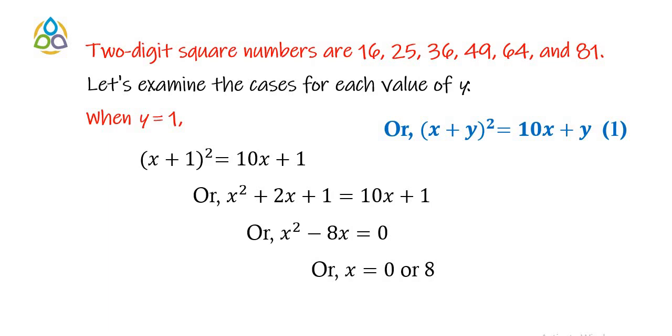As per the inequality of x, x cannot be equal to 0. So the only possible value of x is 8. Now x equal to 8 is obtained under the condition y equal to 1. Hence, the required two-digit number is 81, because 10 into 8 plus 1 which is equal to 81.